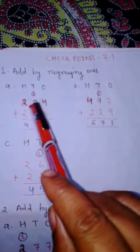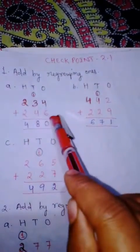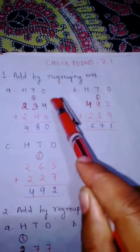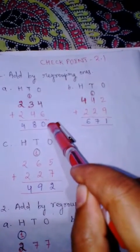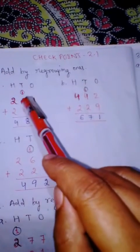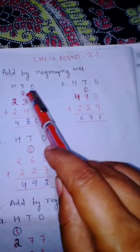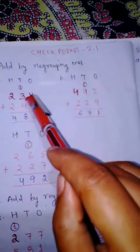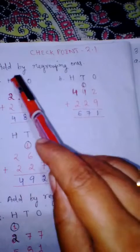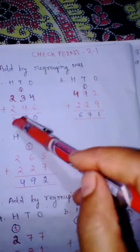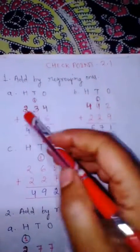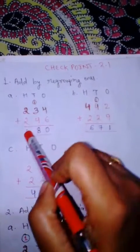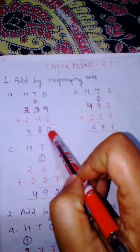See number A: 234 plus 246. So 4 plus 6 is 10. We write 0 by regrouping 10, and write 1 in the tens place as carry. So 3 plus 4 is 7, and 7 plus 1 carry is 8. Now 2 plus 2 is 4. So our answer is 480.